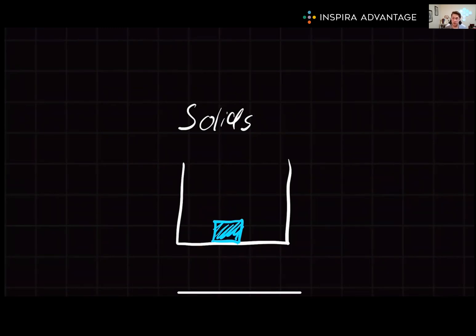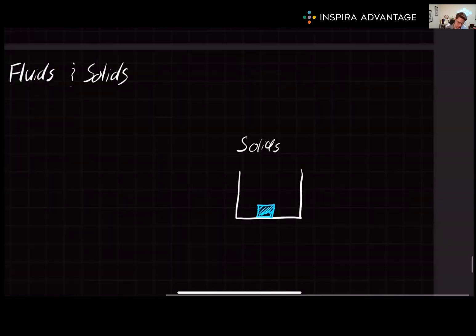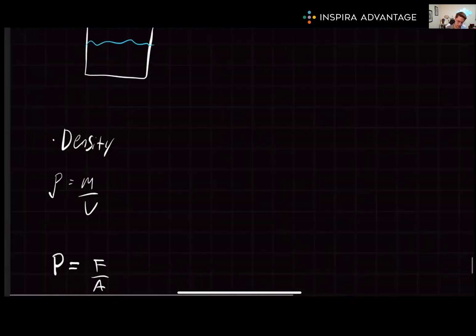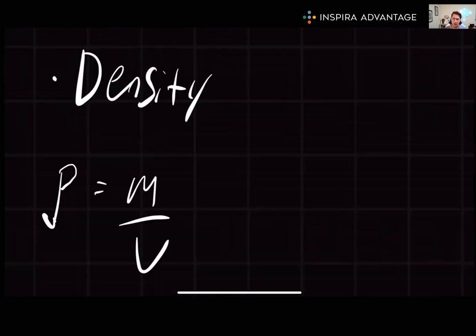Understanding the properties of fluids and solids is crucial for solving many problems in chemistry and physics, so let's start by diving into fluids more deeply, specifically by talking about density. Density is the mass per unit volume of a substance. We represent density by the Greek letter rho, this little p I drew here.